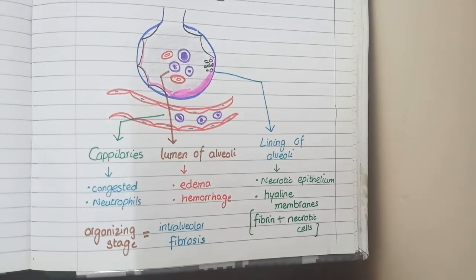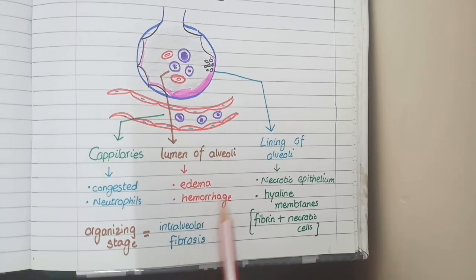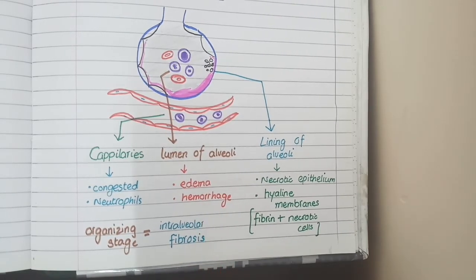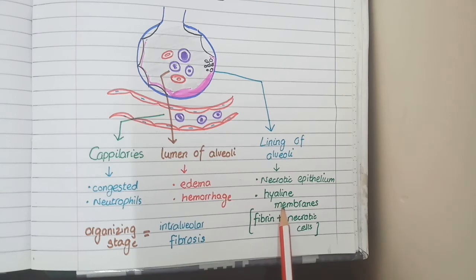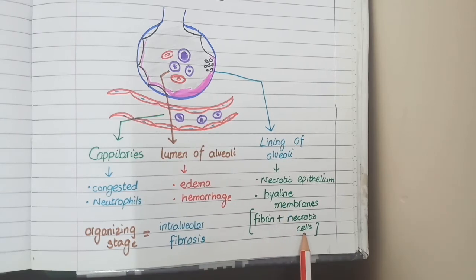So overall on microscopy you see congested capillaries with neutrophils, you see edema and hemorrhage in alveoli, and you see hyaline membranes lining the alveoli that are made up of fibrin and necrotic epithelial cells.